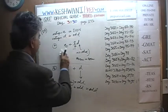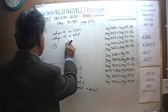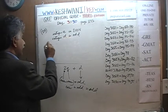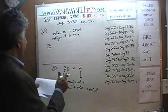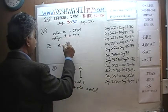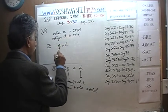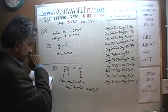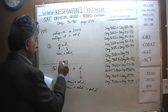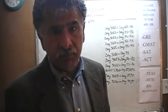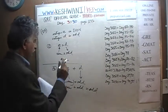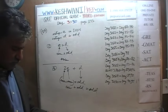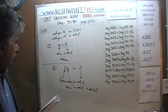Part C says: E×D — even times odd. Just plug in some numbers: 2 times 3 is 6, so even times odd is even. Don't memorize this — just plug in some simple numbers. It only takes a few seconds to figure it out.